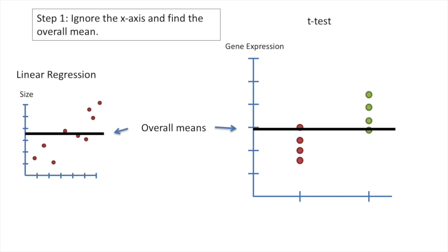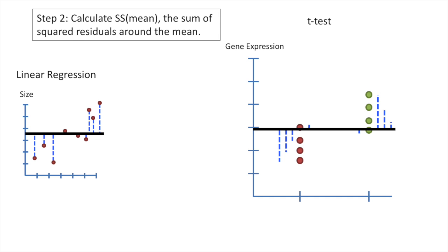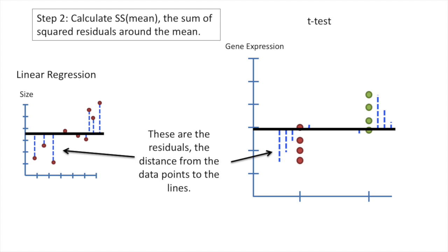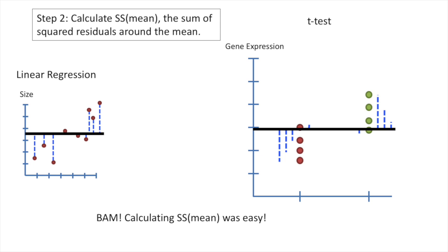Here are the overall means for the linear regression and the t-test. The next step is to calculate the sum of squared residuals around the mean — this is SS mean. These are the residuals, the distance from the data points to the lines. In this case, the lines are the overall means. Calculating the sum of squared residuals around the mean was easy.